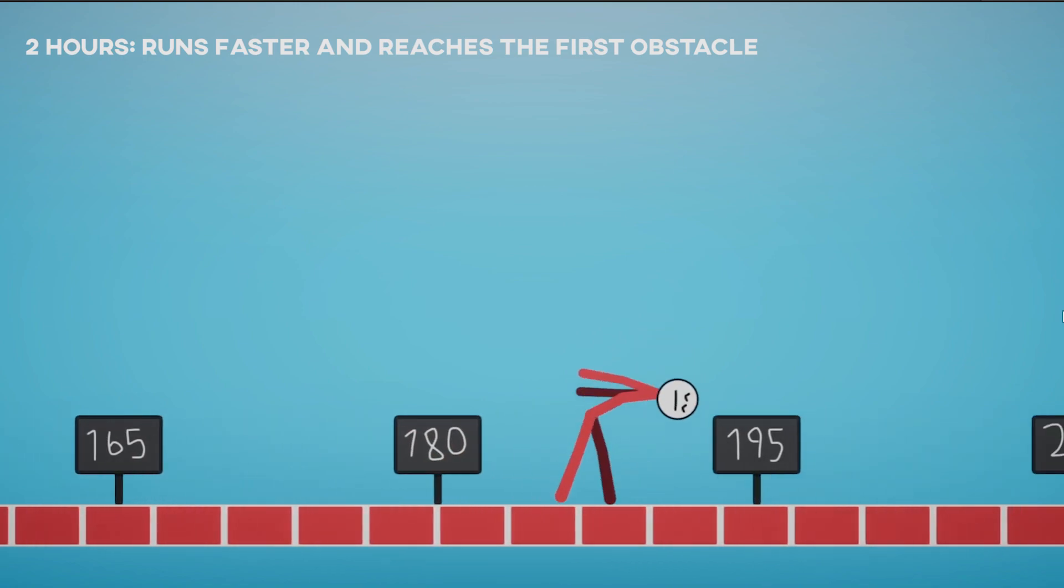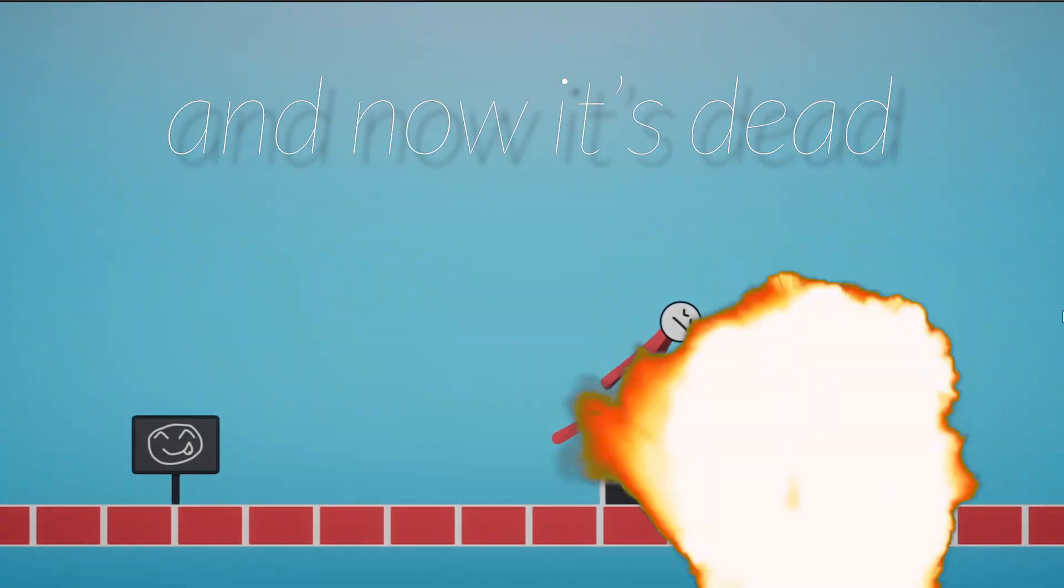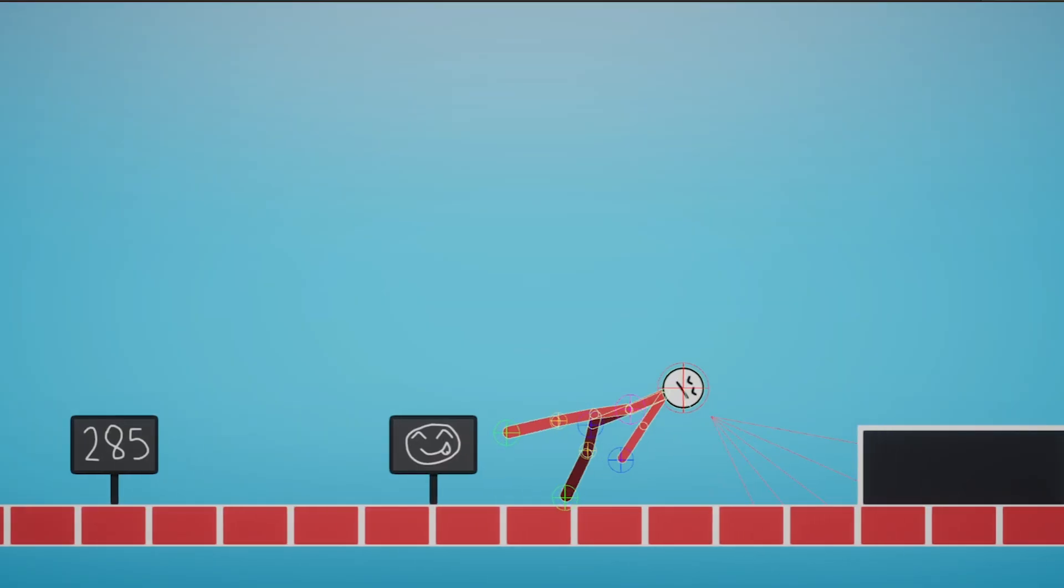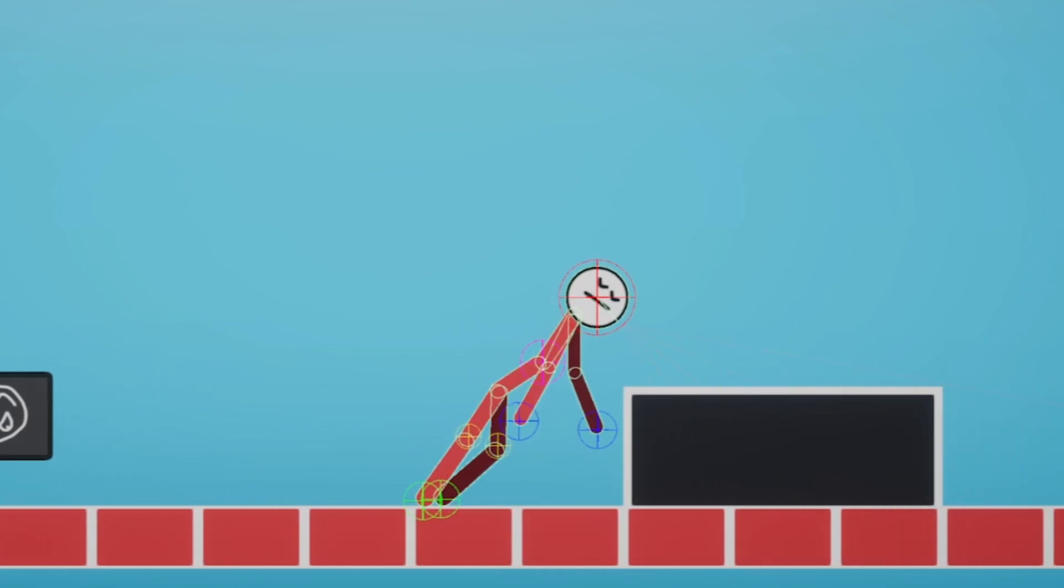After 2 hours of training, it runs significantly smoother and faster than before, and it's even able to reach the first obstacle, and now it's dead. As you saw, it doesn't know what an obstacle is, or what to do with it, but it will figure it out with a couple of hours more of training.